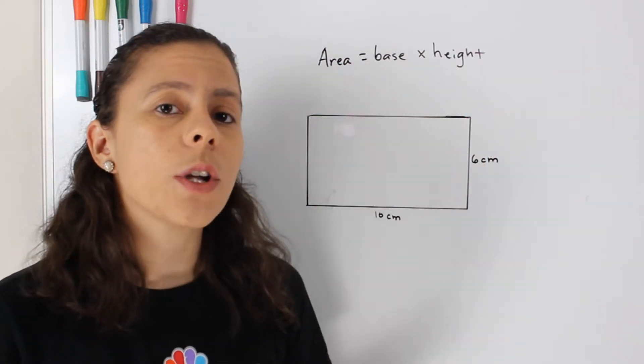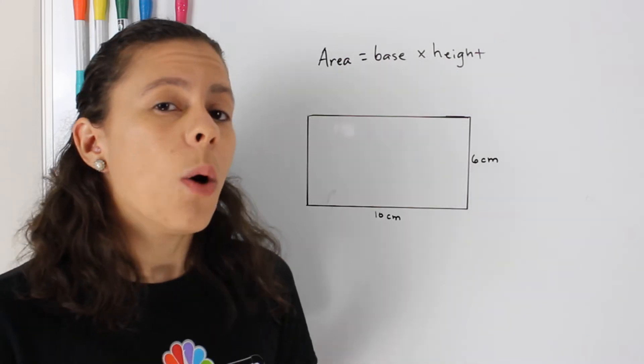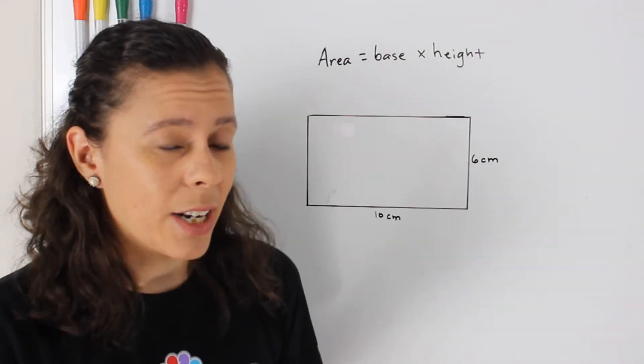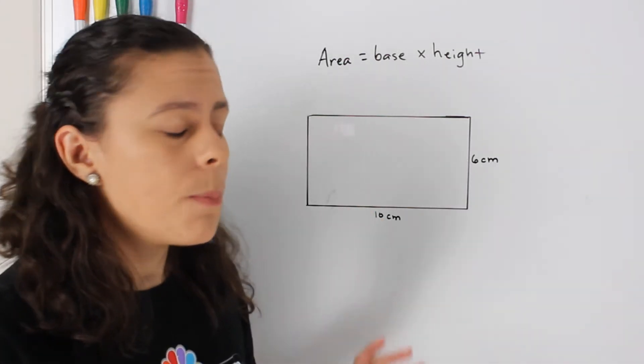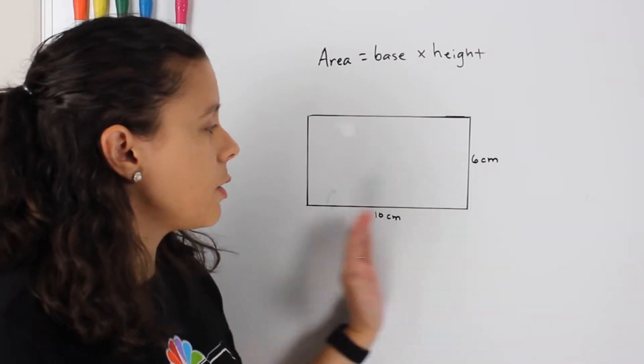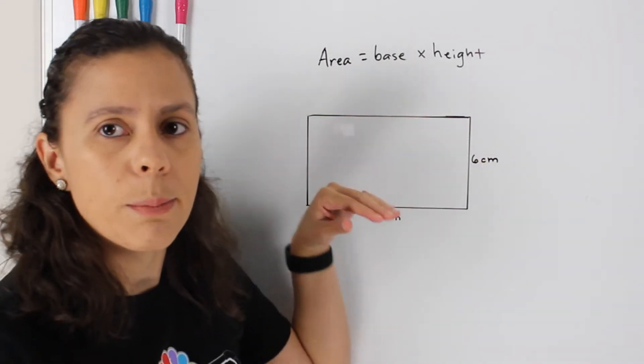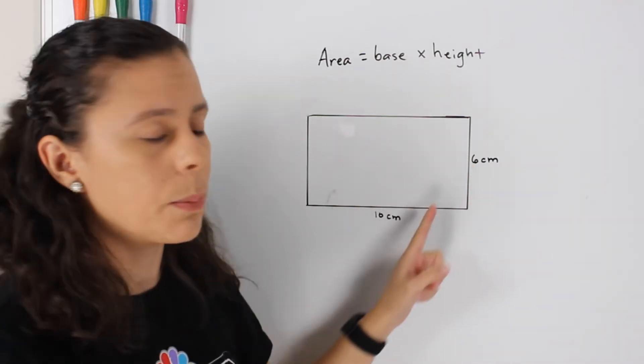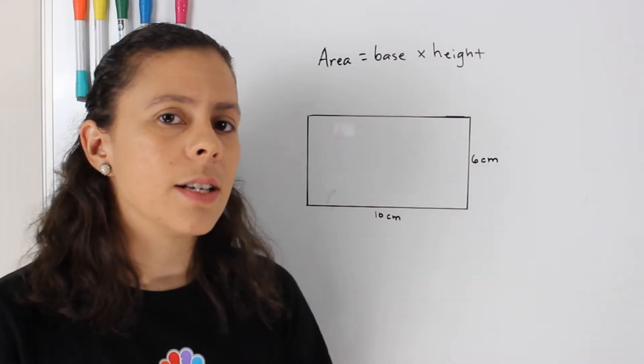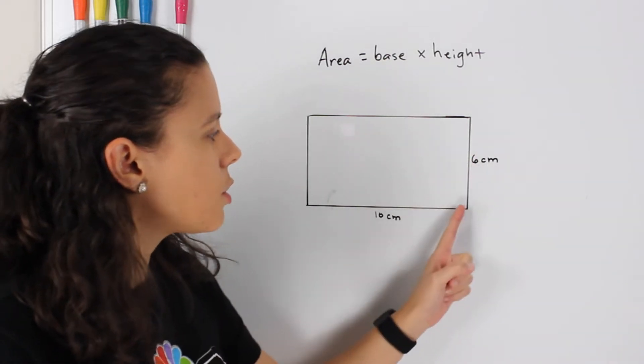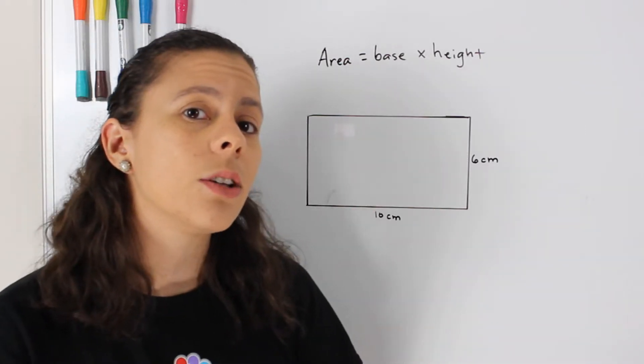How do you know which one is the base and which one is the height? Well, it doesn't really matter, especially with a rectangle, because you could have this rectangle standing in this position, or you could flip it over and have it standing on the other side where this would be the base. What matters is that you know that these two sides are perpendicular to each other.